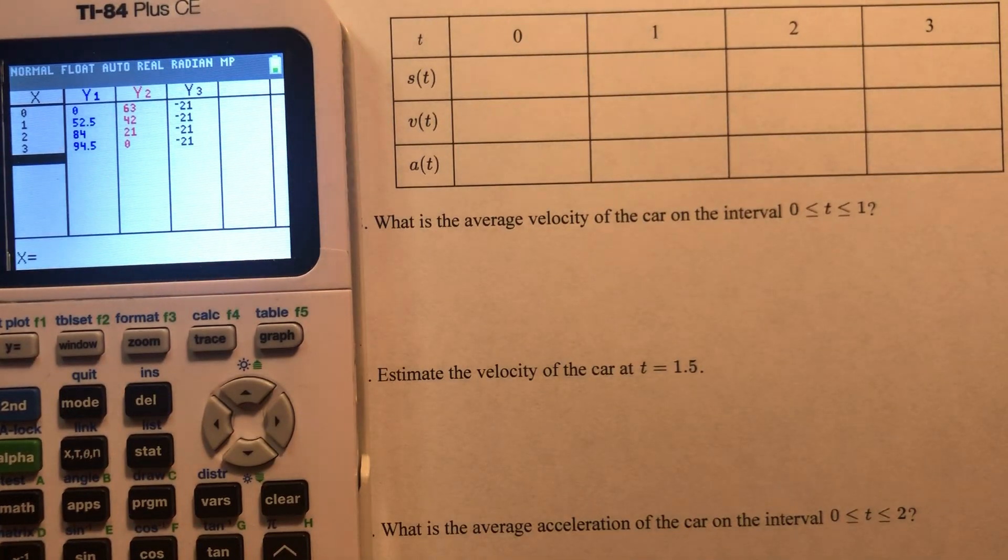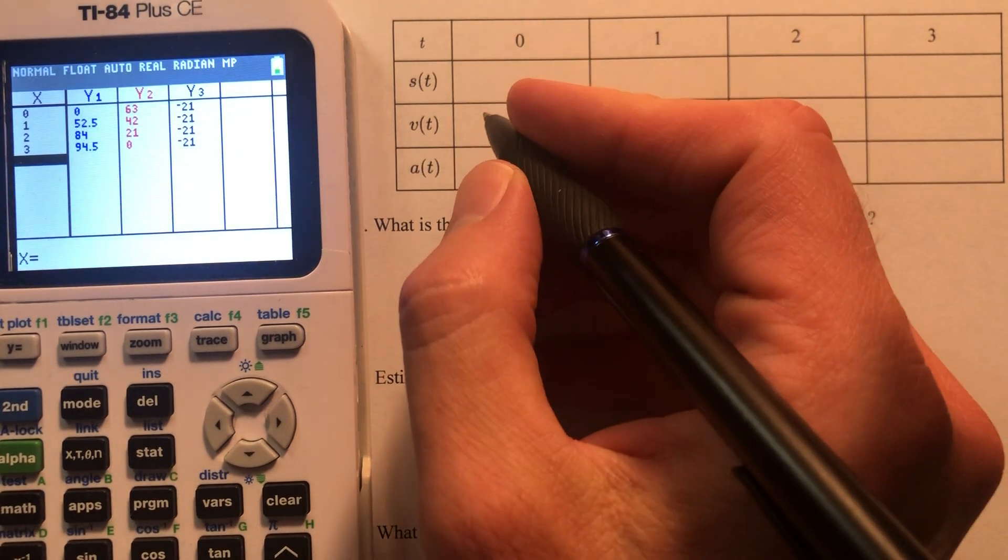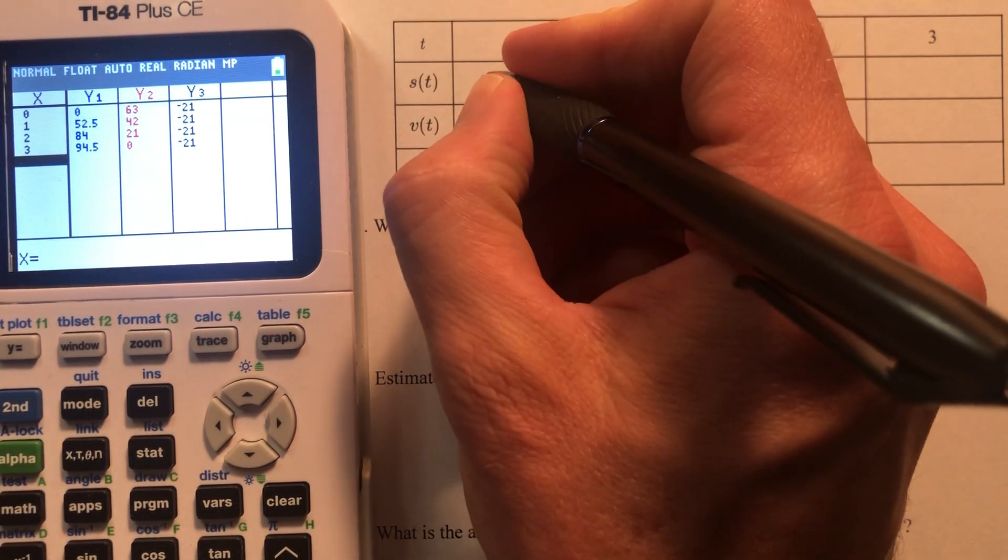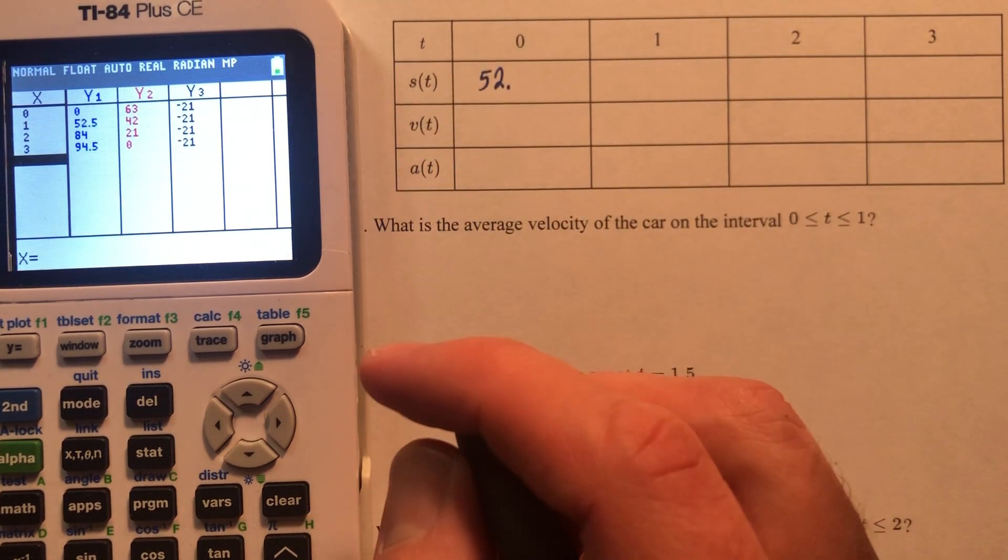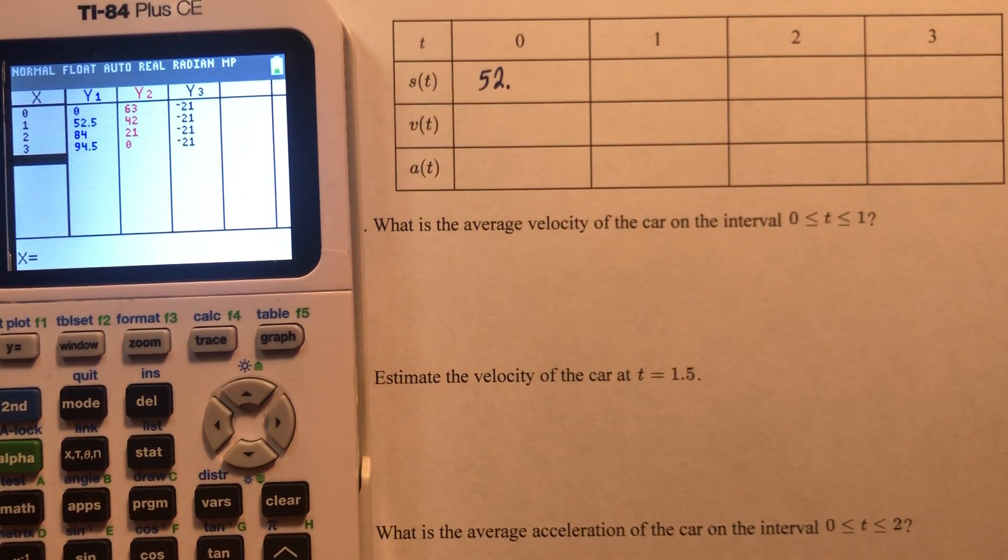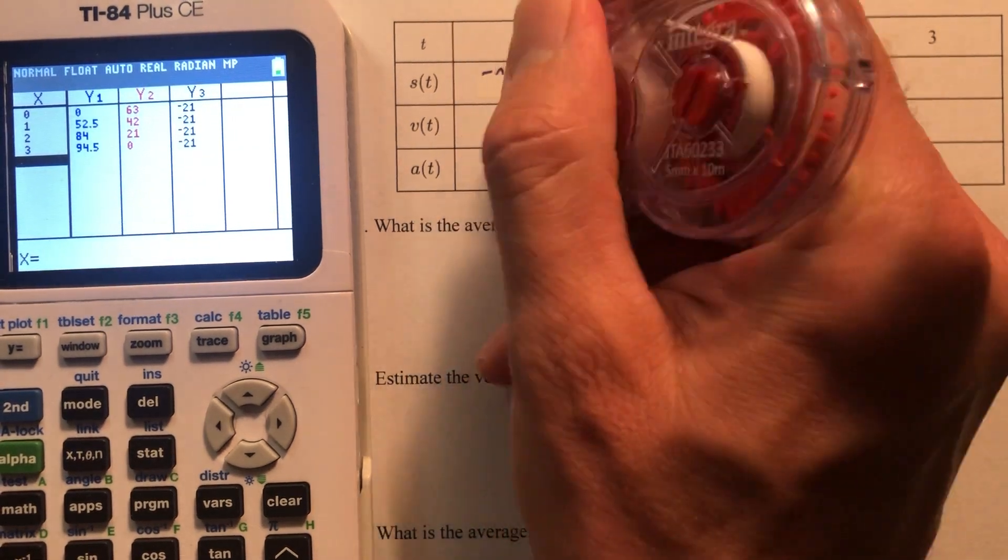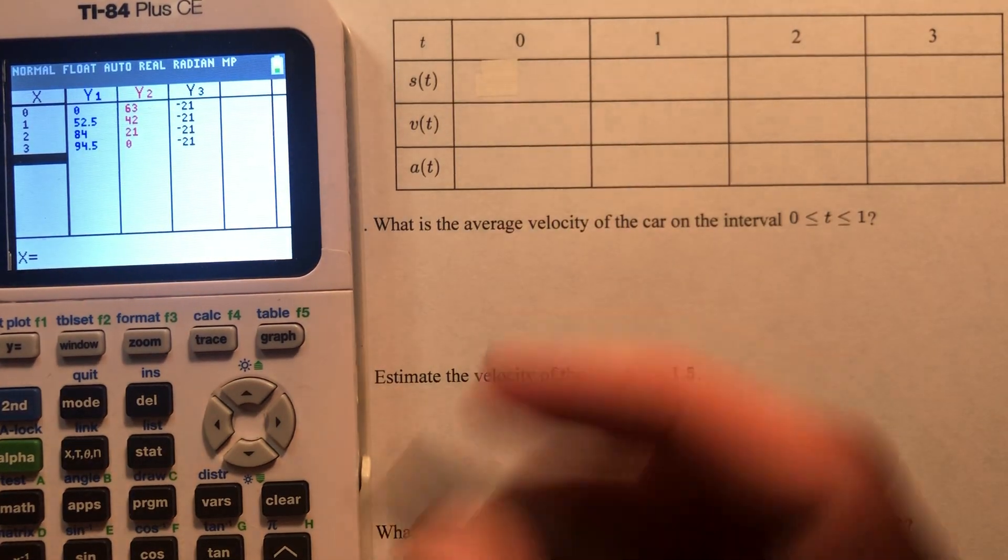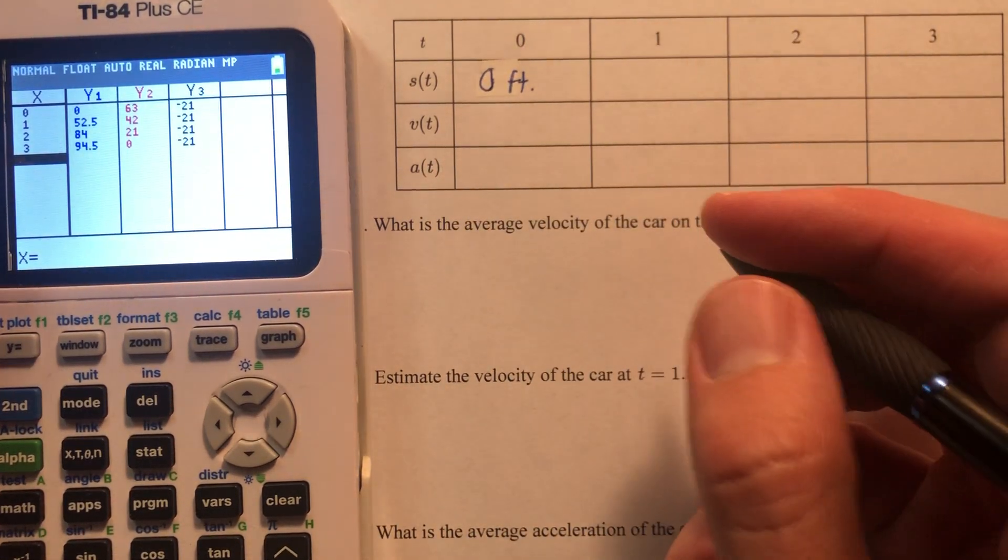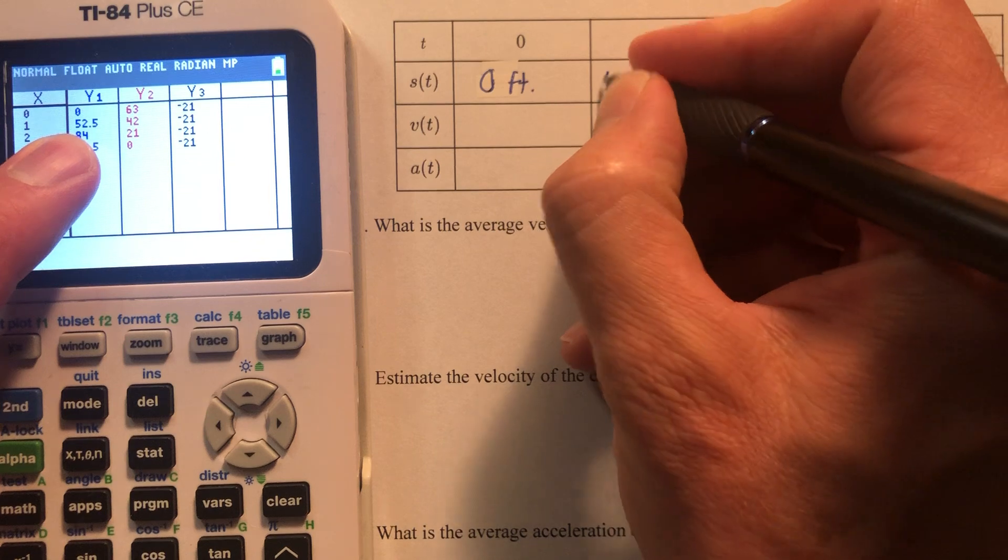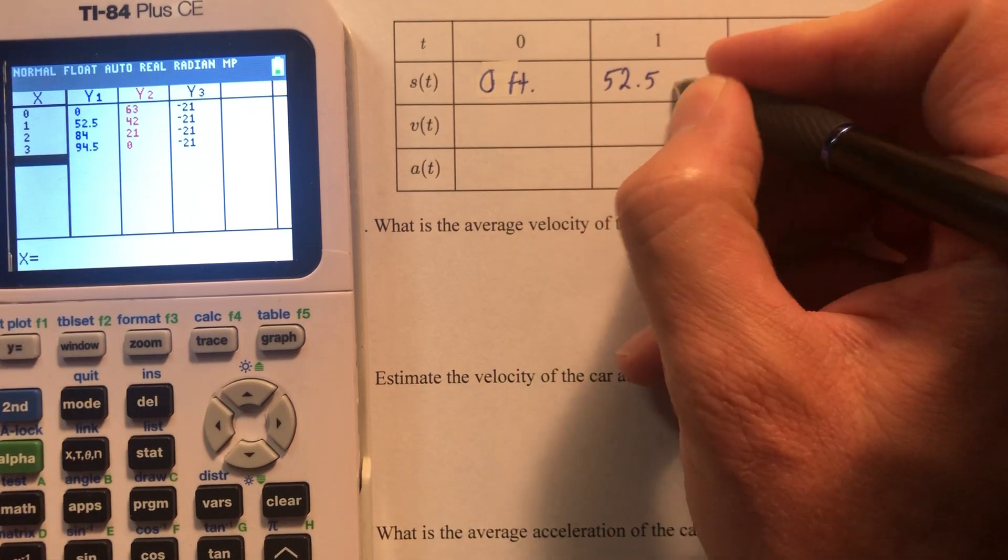But at time t equals 1, the position of the car is 52.5. No, it's not. I was looking in the wrong place. At t equals 0 it's 0 feet. At time t equals 1, the position of the car is 52.5 feet. There it is. I'm going to say the car traveled 0 at 0, right?